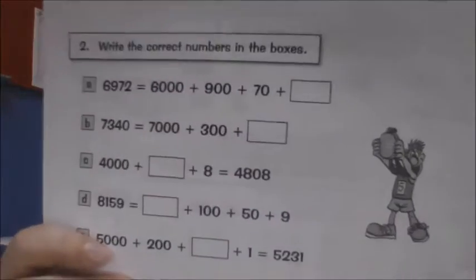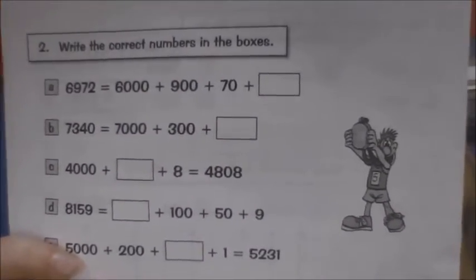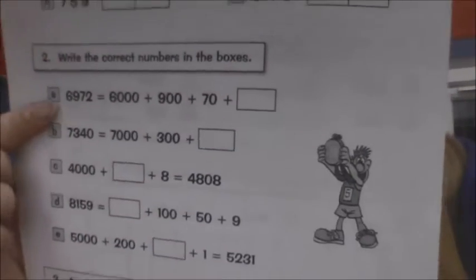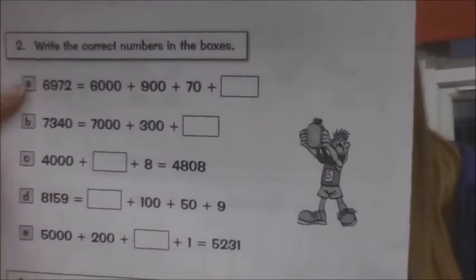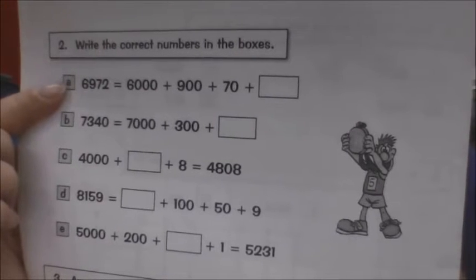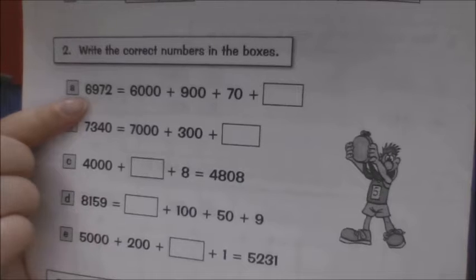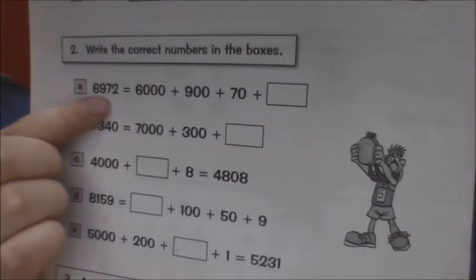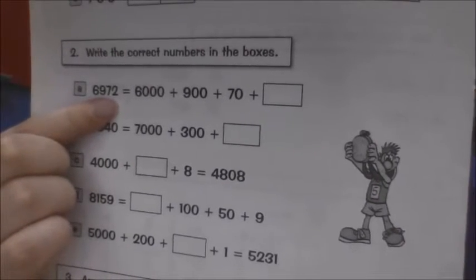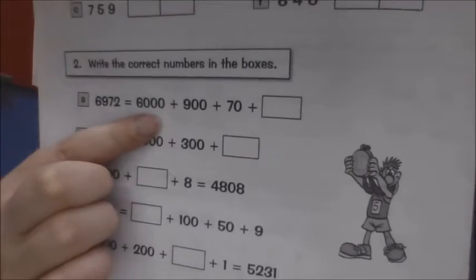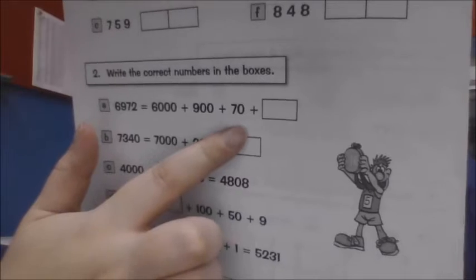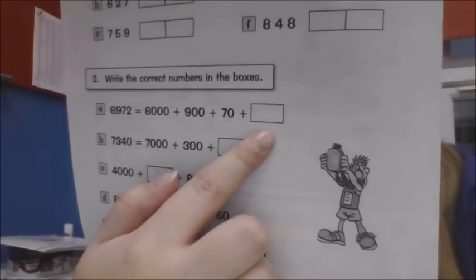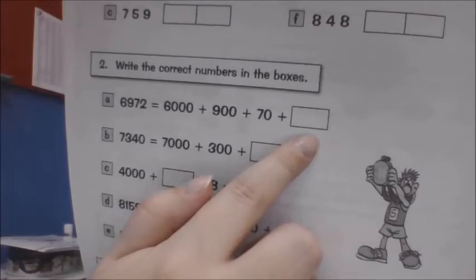Now question number 2. This is asking you to write the correct numbers in the boxes. And you'll notice here on A where most of it has been done for you, that what we've done is we've partitioned our digits. So here we've got 6,972. And we've broken that down to show the 6,000, 900, 70. Does anybody know what my last number would be? So you've got to split your numbers into the thousands, hundreds, tens and ones.